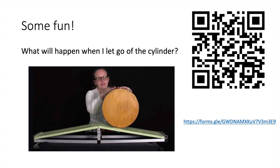We started this lecture with a demo asking what would happen to a cylinder on a slope. Most people thought it would roll down, but this was a special cylinder with an unbalanced mass. When released, it actually rolled up the slope because the higher mass was at the top, so the centre of mass could move downward while the cylinder itself moved upward.